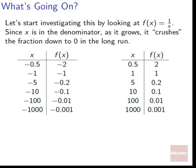If we look at the negative side: at negative 0.5 it's at negative 2, at negative 1 it's at negative 1, at negative 5 we're at negative 0.2, at negative 10 we're at negative 0.1, and at negative 1,000 we've made it to negative 0.001 — it just keeps getting smaller and smaller. There's no number we can plug in to actually get 0; we just get very, very small numbers. These giant denominators will approach 0 but never quite make it.